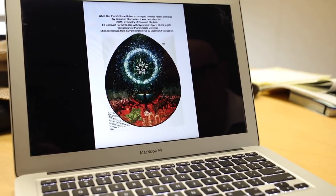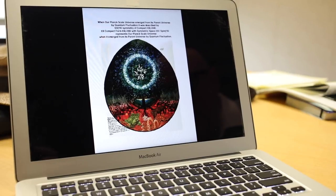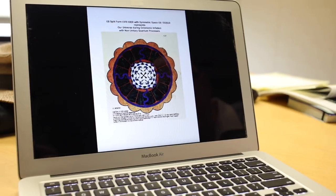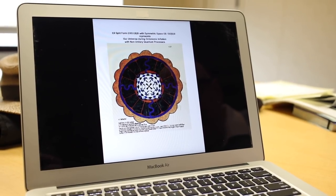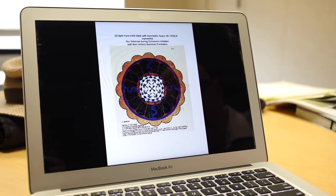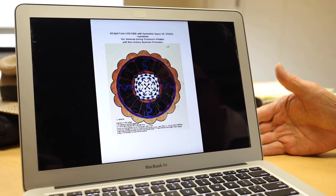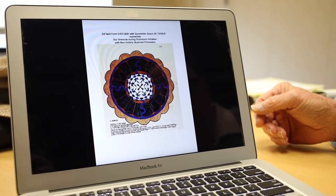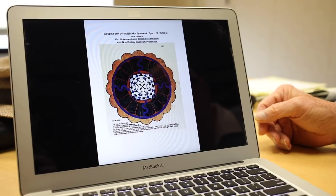It represents the universe at the Planck scale when it first emerged from its parent universe. You can see in the thing the roots it has into its parent universe. It still never goes away. Then you have this thing getting ready to emerge. When it emerges, it's a phase transition from the E8 compact form to the E8 split form, which has SO(8,8) as the basic symmetry group. It is octonionic inflation during this period.